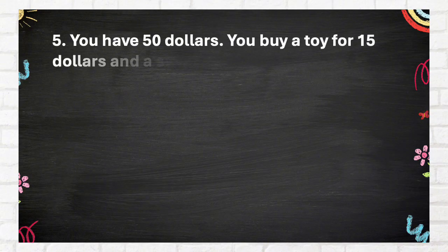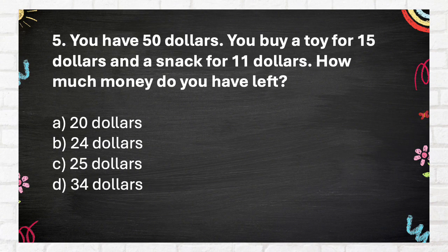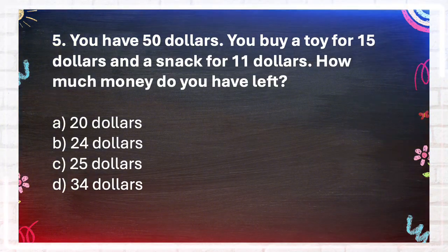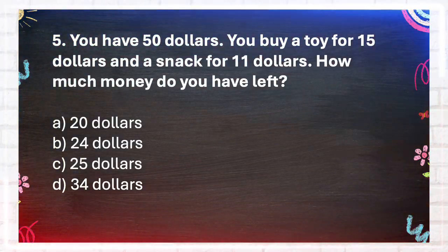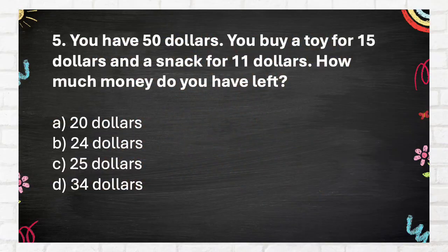Question number 5. You have $50. You buy a toy for $15 and a snack for $11. How much money do you have left? Again, you have $50. You buy a toy for $15 and a snack for $11. How much money do you have left? A. $20. B. $24. C. $25. D. $34. The answer is B. $24.